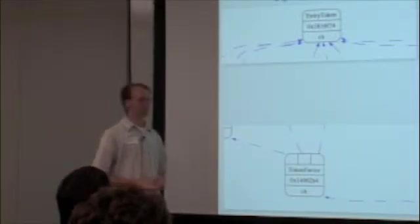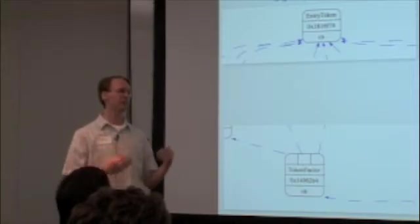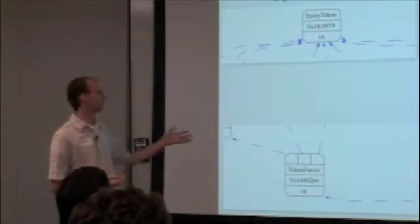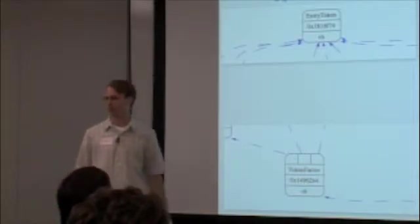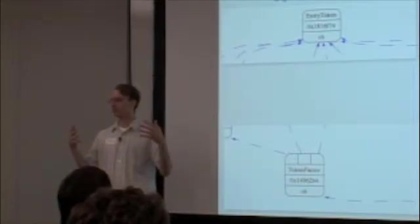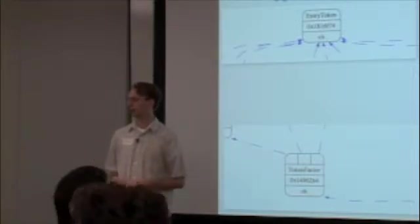At the top of the graph is an entry token, which is essentially the token that indicates the very beginning of the block. And in the middle of the graph, we also have a special node called the token factor, which is a way of having multiple chain edges be combined into one so that it can be conveniently depended on by another node.